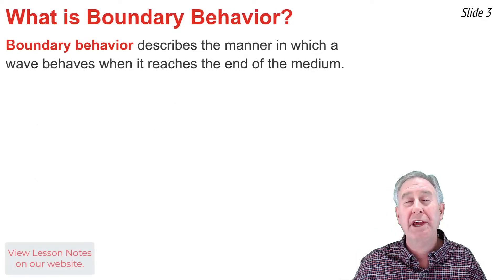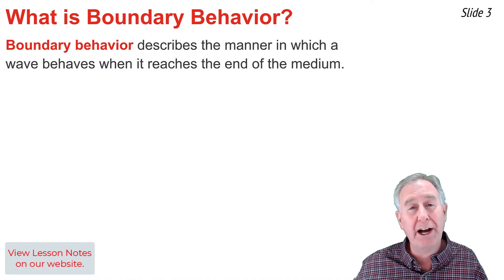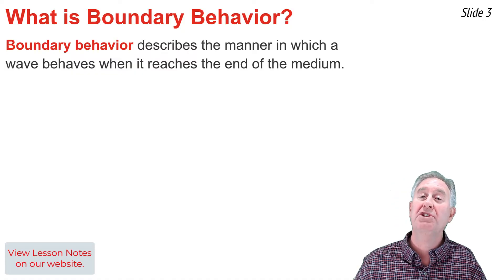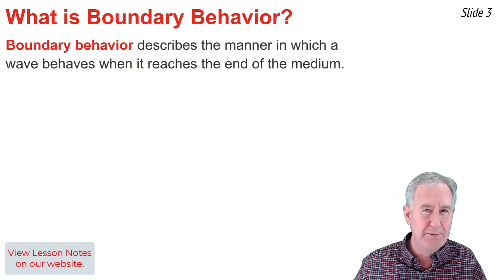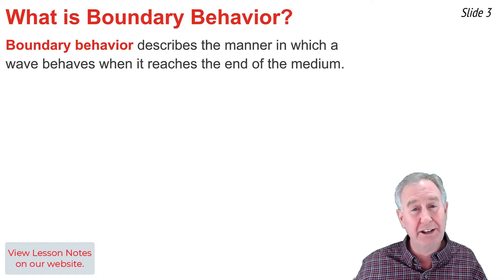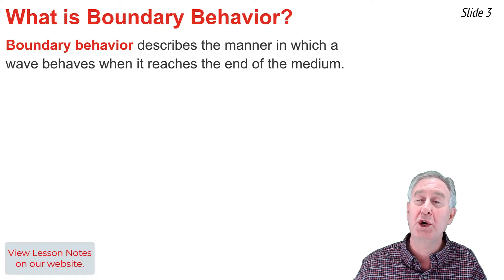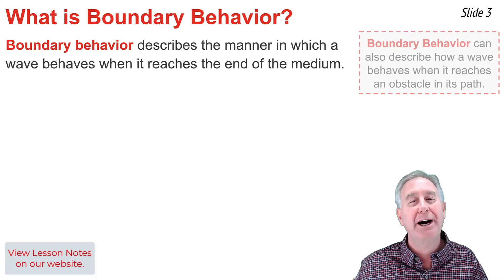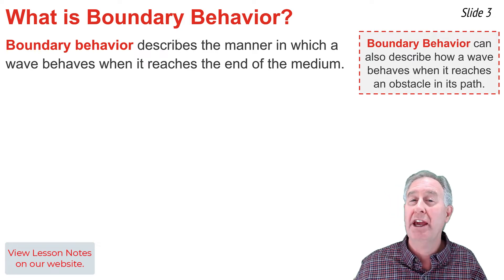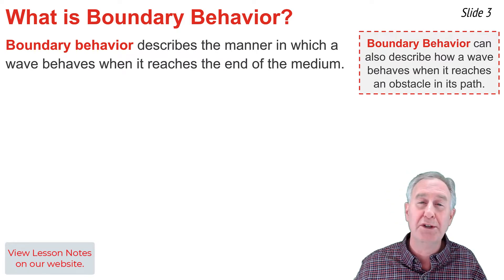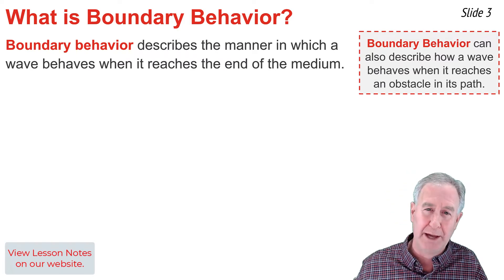When a wave is traveling through a slinky, a body of water, or any medium, it will eventually reach the end of the medium, and the manner in which it behaves at the end of the medium is known as boundary behavior. Boundary behavior also describes the behavior of a wave that encounters an obstacle in its path.